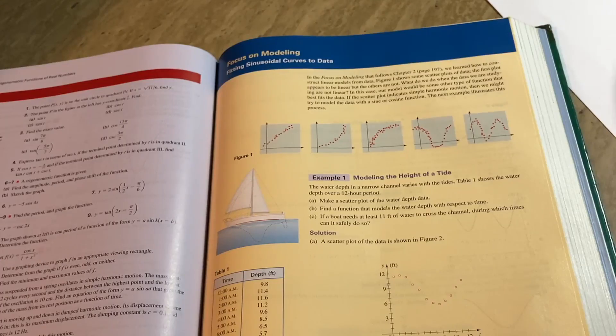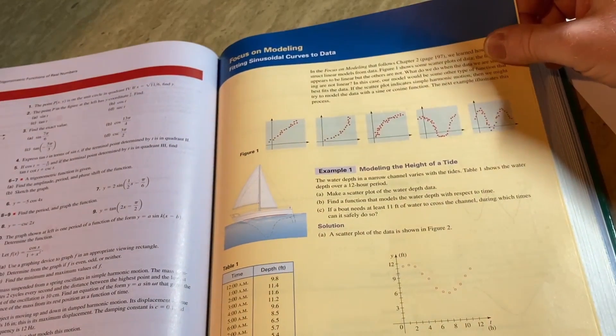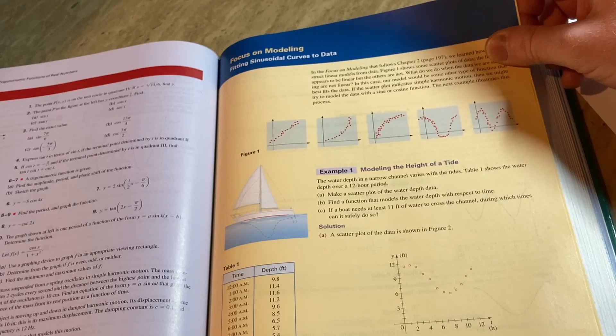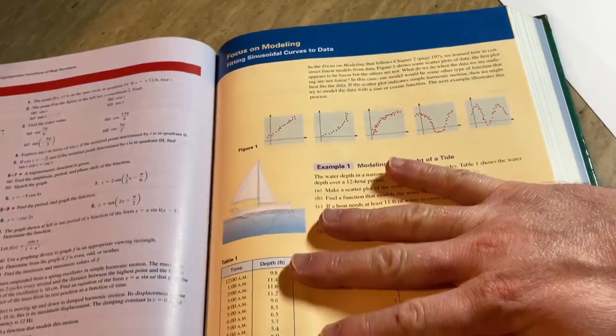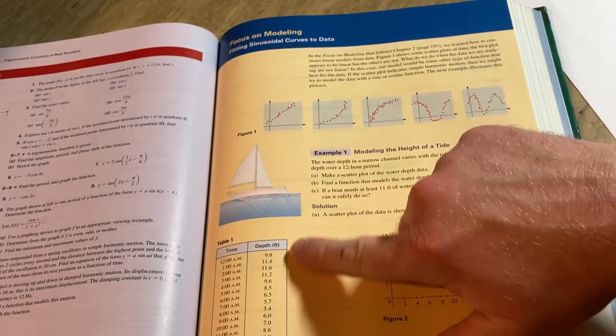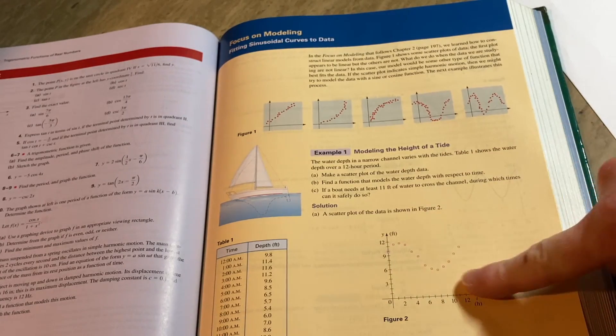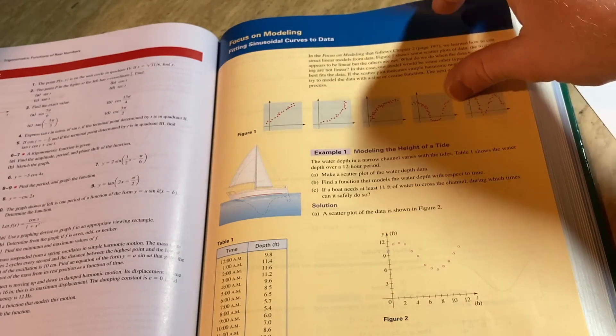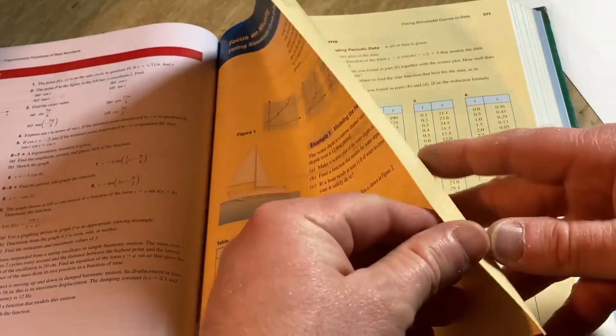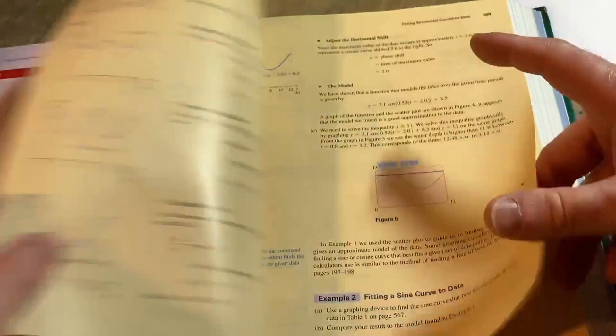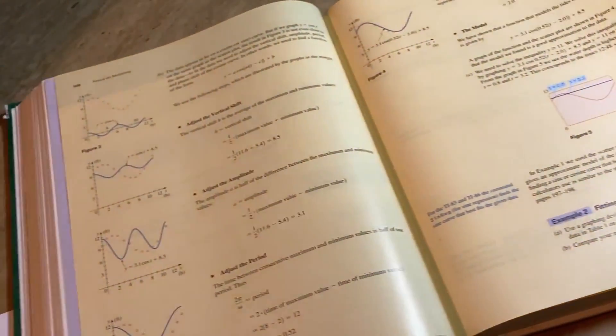I was like, that's really cool. I forgot what section it's in. Let me find it for us. Here it is. This is what I was talking about. This is a focus on modeling fitting sinusoidal curves to data. So the example they give you is they give you the deaths and the times and they plot it. And so you see it kind of looks like a trigonometric function.